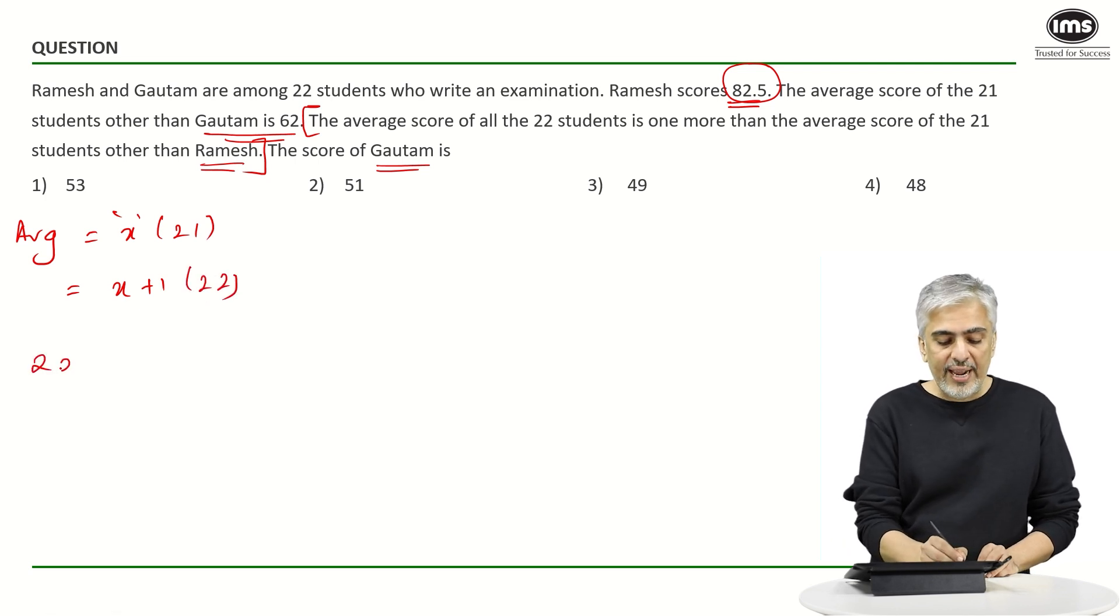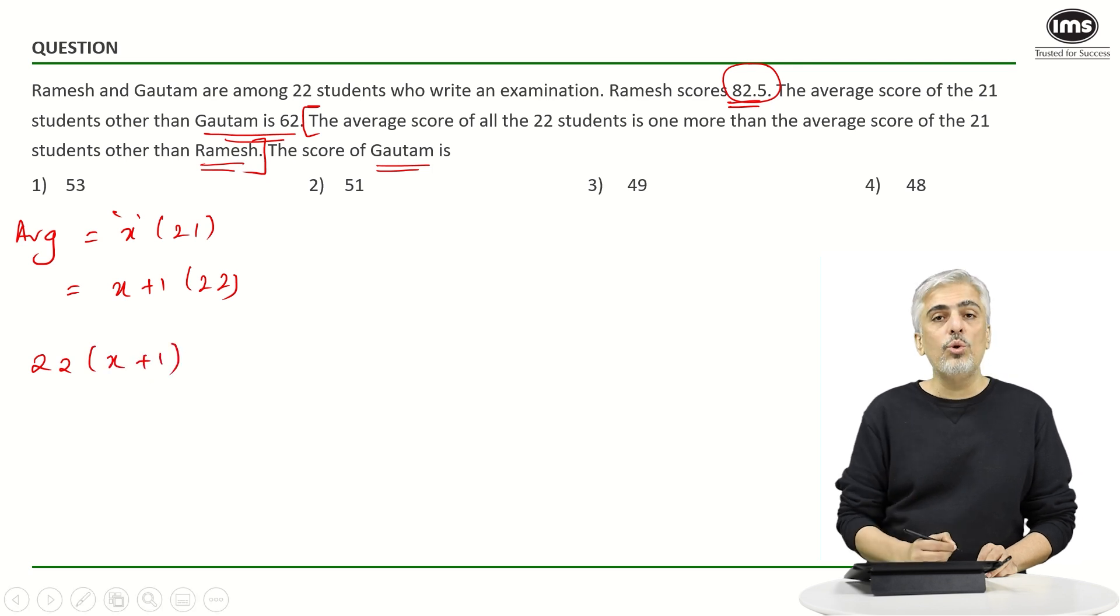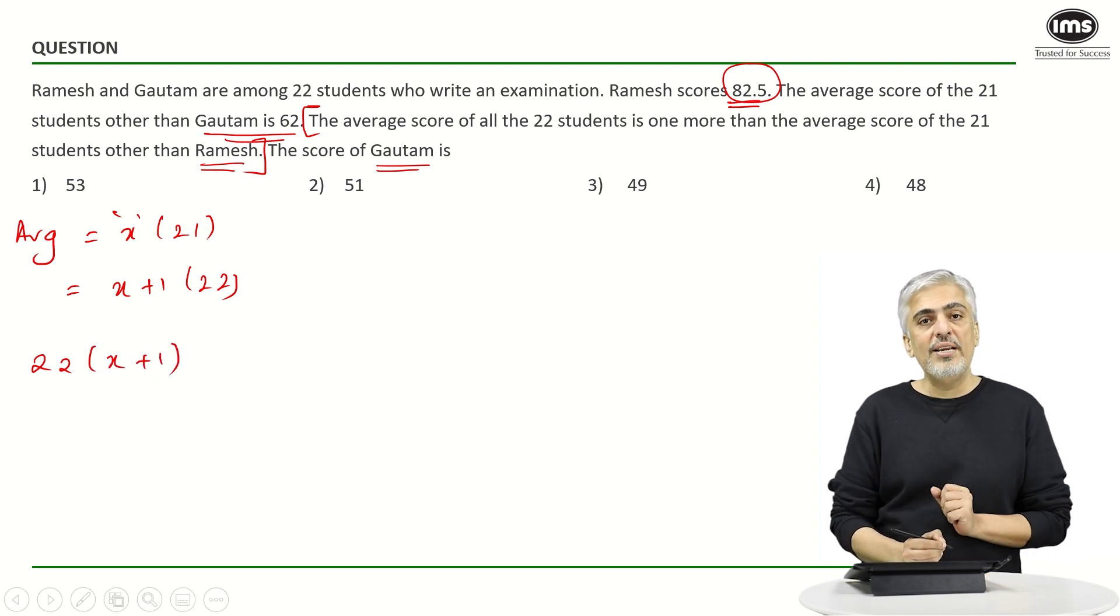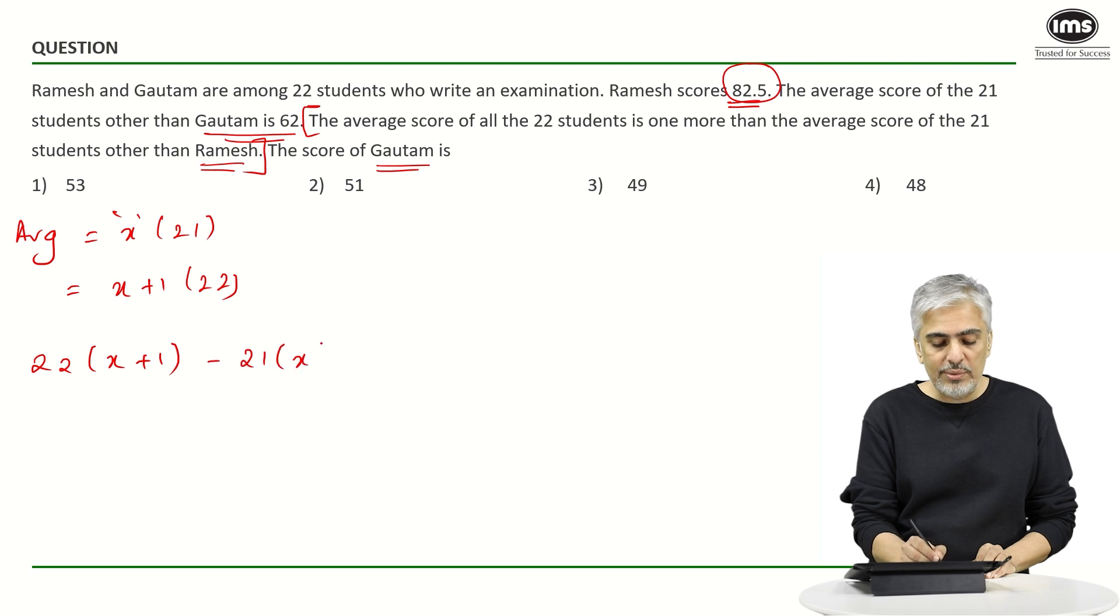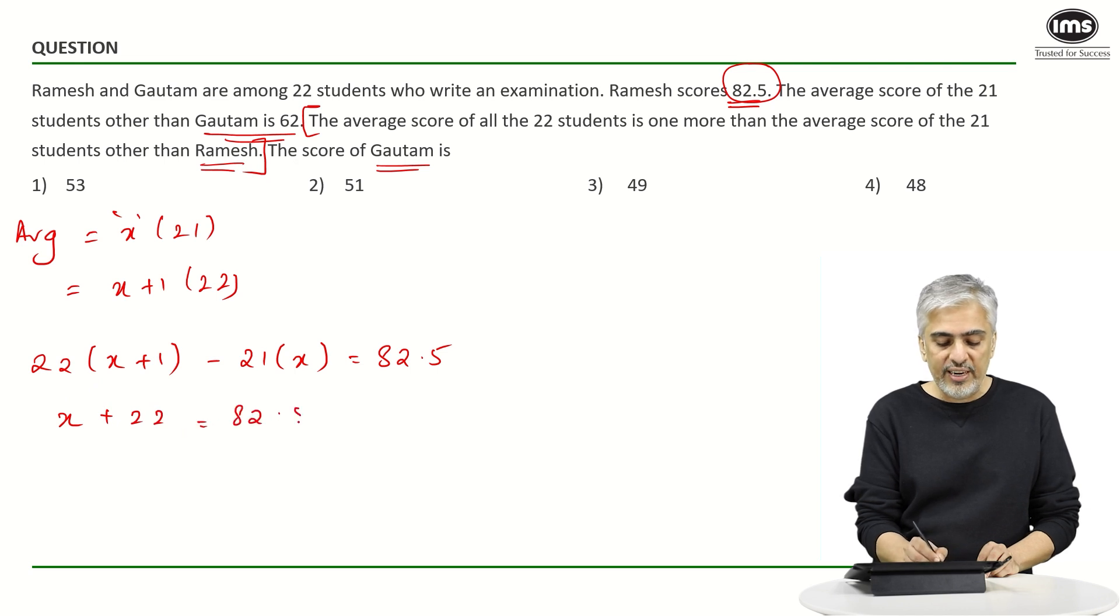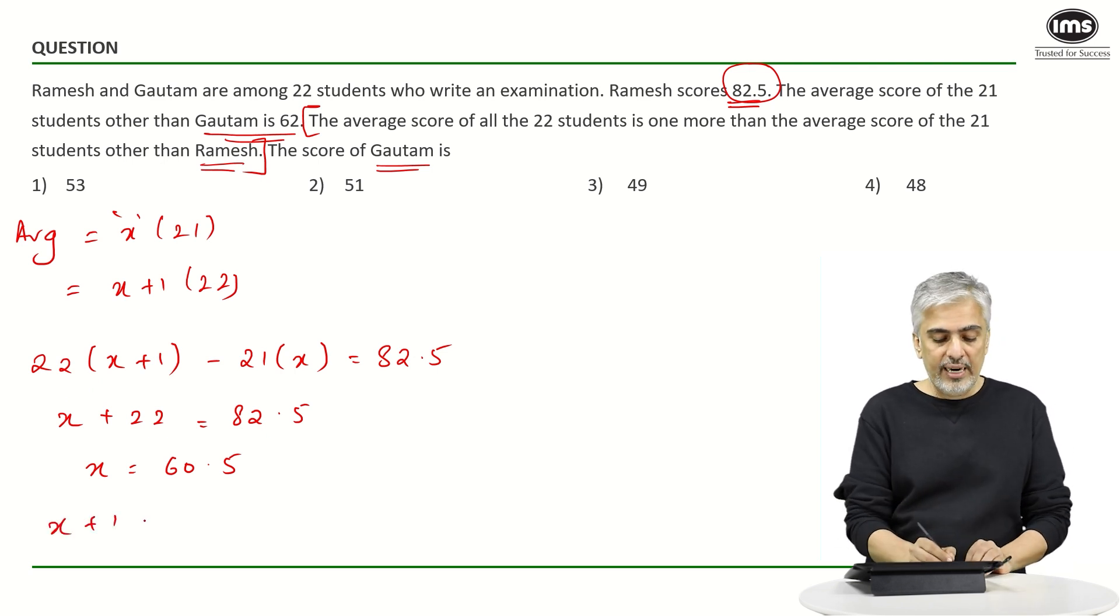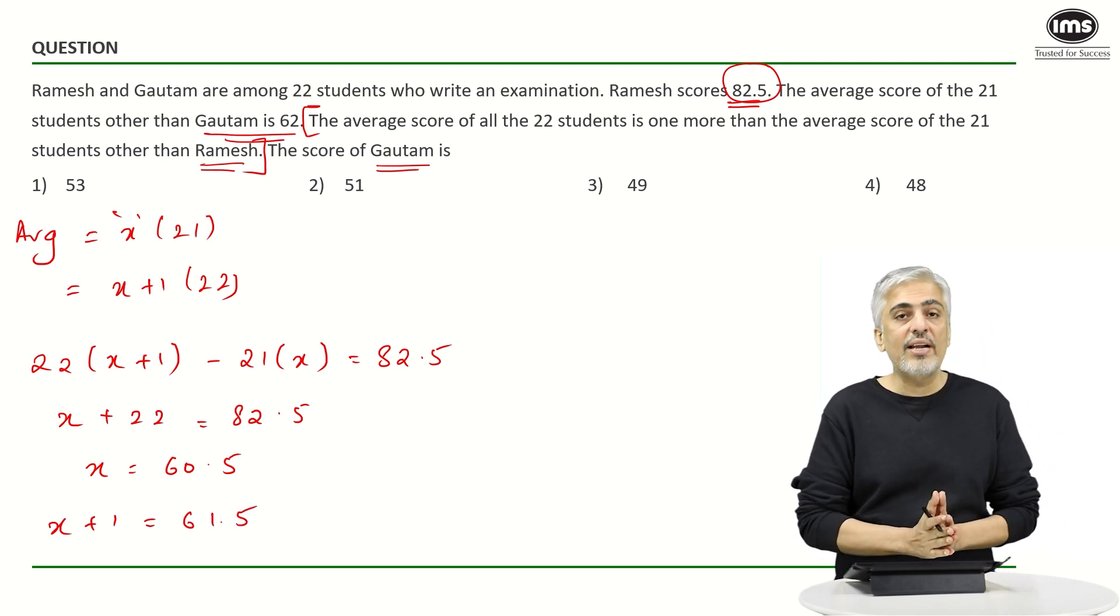So 22 into x plus one will be the total score when Ramesh is included, and 21 into x will be the total score when Ramesh is not included. This should be equal to 82.5, right? Let's continue that. So we'll get 22x minus 21x which is x, x plus 22 is 82.5, which means x is 60.5, and x plus one, that is the average of everybody including Ramesh, is 61.5. We got that much.